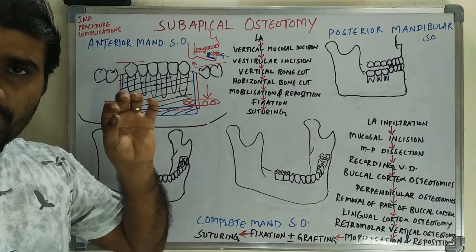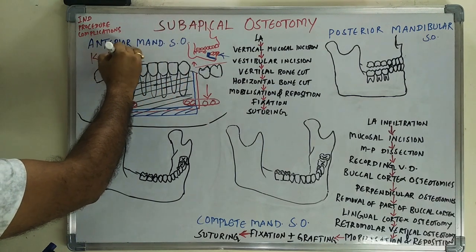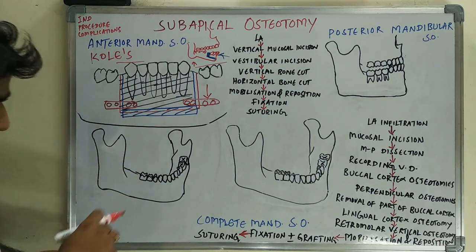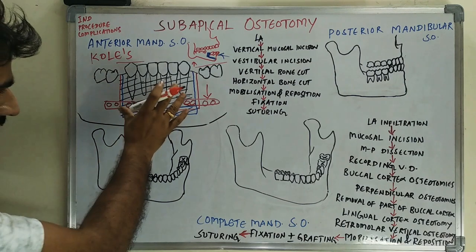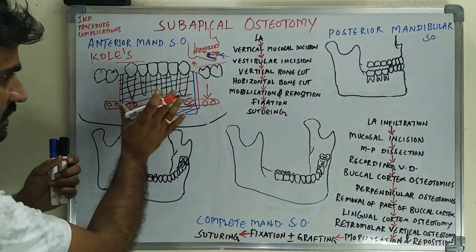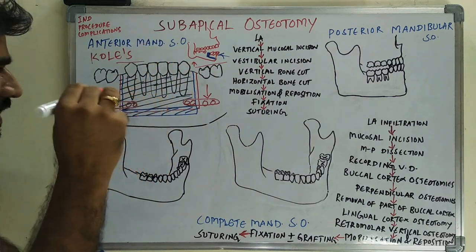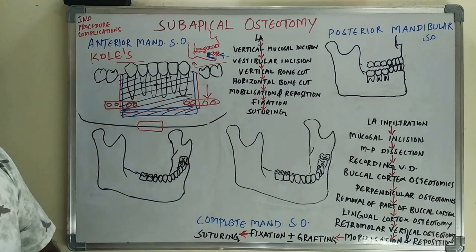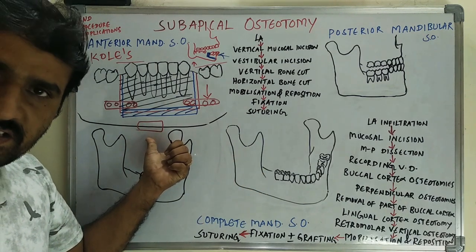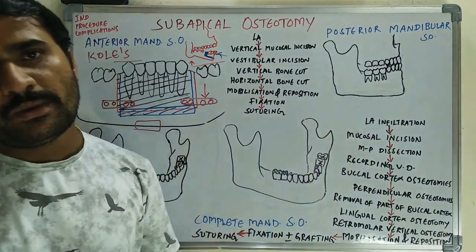One variety of anterior mandibular subapical osteotomy is the Cole's procedure. In the Cole's procedure the technique is the same, but a bone graft is taken from the lower part of the mandible using the same incision. If you are planning posterior repositioning of the mandibular anterior segment, the bone defect or gap between segments is grafted using bone taken from the lower border in the symphysis region.